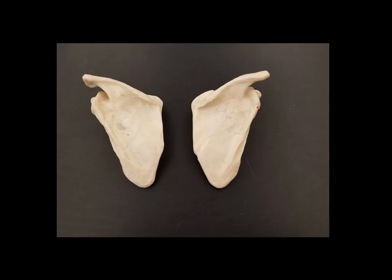Now here, remember this is that glenoid fossa. And the glenoid fossa is what the arm attaches to. So it has to face outward towards the side of the body so that the arm can attach to it.